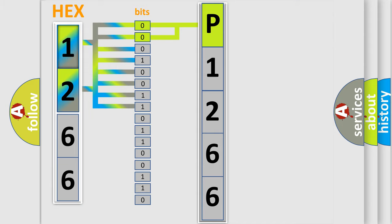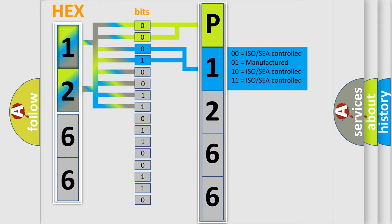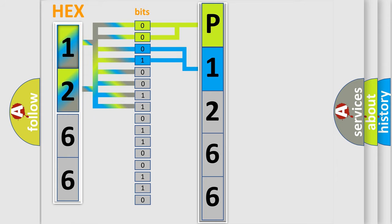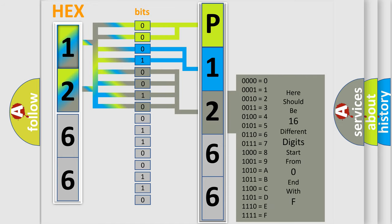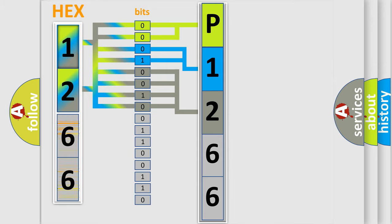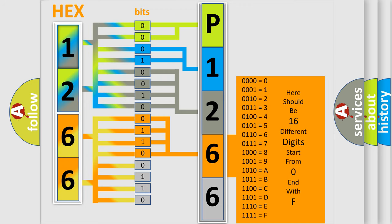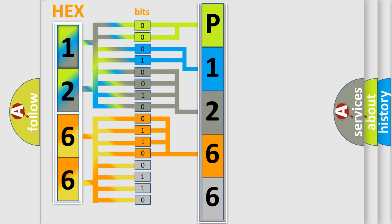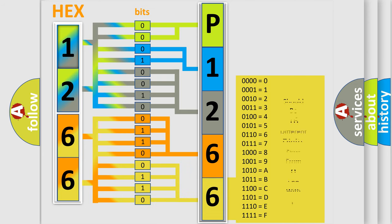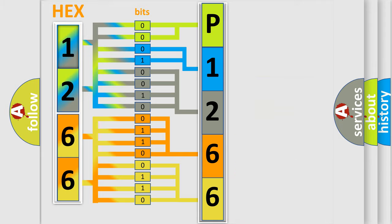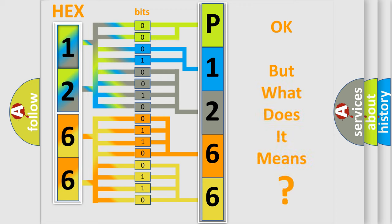The next two bits determine the second character. The last bits of the first byte define the third character of the code. The second byte is composed of a combination of eight bits. The first four bits determine the fourth character of the code, and the combination of the last four bits defines the fifth character. A single byte conceals 256 possible combinations. We now know in what way the diagnostic tool translates the received information into a more comprehensible format. The number itself does not make sense to us if we cannot assign information about what it actually expresses.